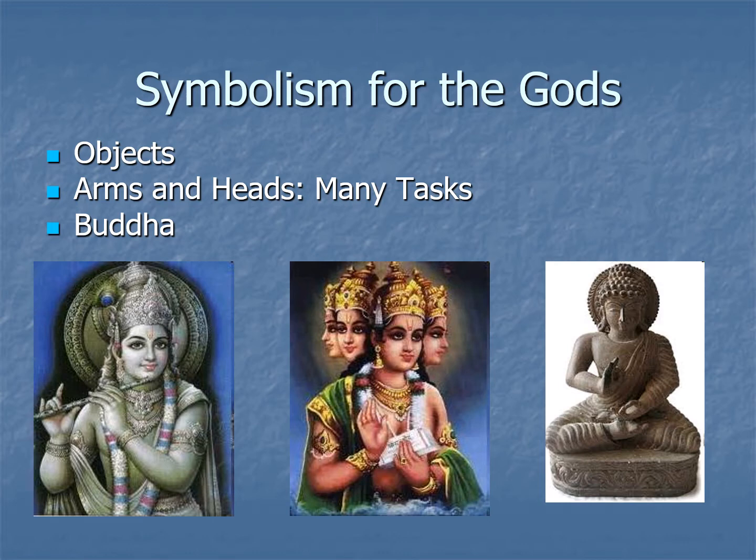Another thing you notice is that gods always have multiple heads or arms, because they have so many tasks to do. To think of a god that can do everything with just two arms and one head is seen as foolish. Brahma has four heads, and Shiva will sometimes have three heads. So you'll be able to identify the deity based on how many heads or arms they have.